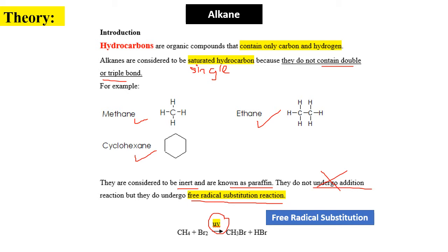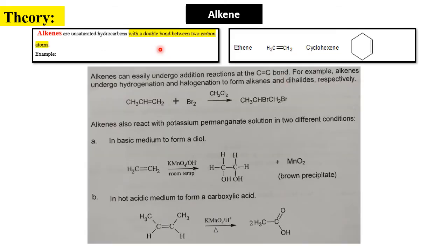The easiest way to recognize that alkane undergoes free radical substitution is with UV light. The function of UV light is to supply energy for the homolytic cleavage of bromine, in order to form free radicals. Always remember: UV light supplies energy for homolytic cleavage.